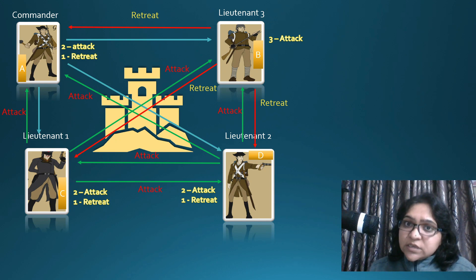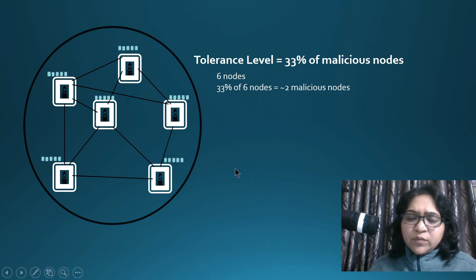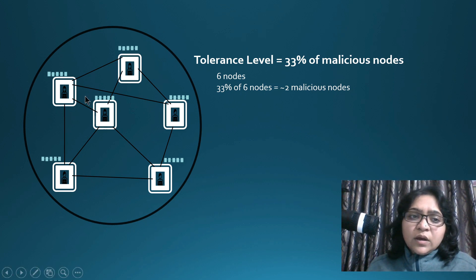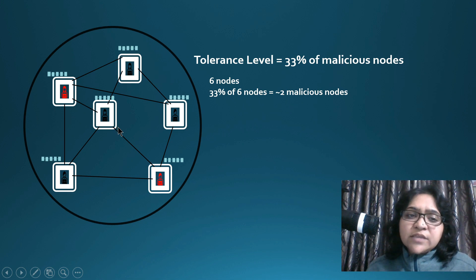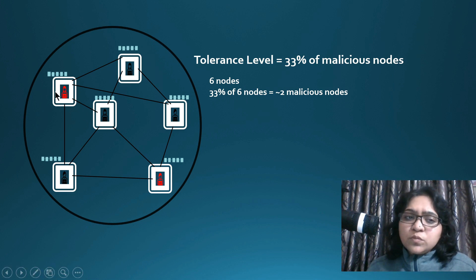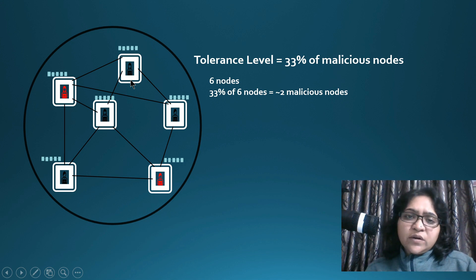Now let's see how this affects blockchain. In our distributed network, all nodes are connected. The tolerance level is 33%, meaning that out of six nodes, if two nodes are malicious, we are still going to get the right consensus mechanism. If all honest networks are sending correct information about whether to accept a particular block's transactions, but two malicious nodes send wrong information, the majority of the stakes still go towards the honest network transaction.